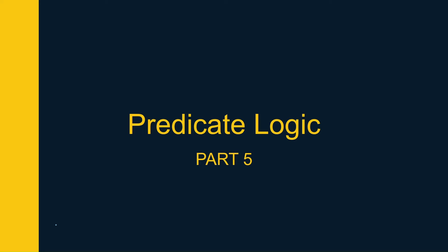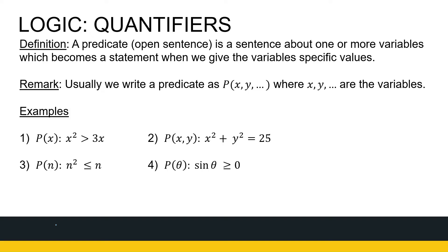We are still looking at logic. We're going to be looking at the concept of a predicate and some quantifiers in this section. A predicate is an open sentence — a sentence about one or more variables which becomes a statement when we give the variable a specific value. We often write a capital P with the variable in brackets for our predicate.